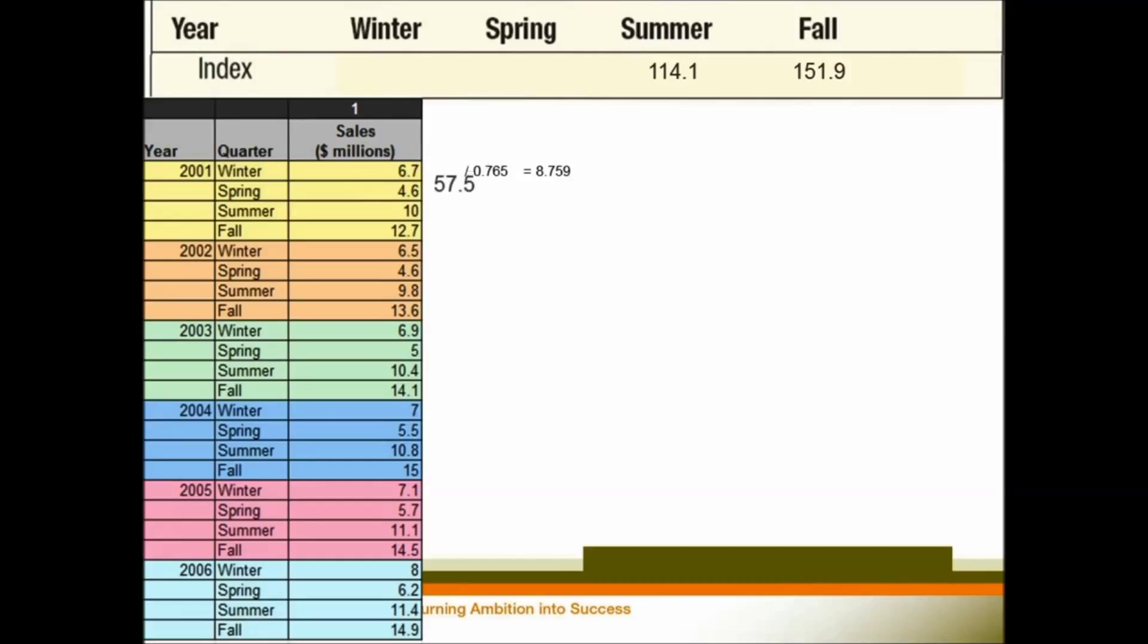And for the spring sales, we divide it by our spring's index. Summer sales divided by the summer index. So we do it one by one, for every year, every quarter. We call this procedure the deseasonalization of the data.